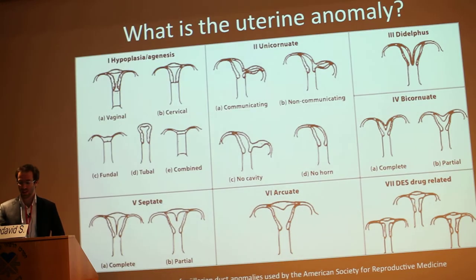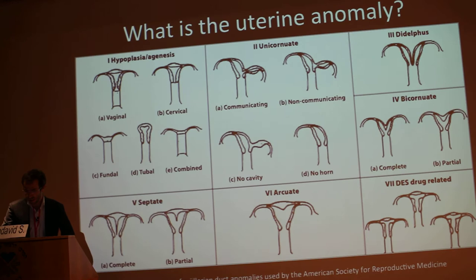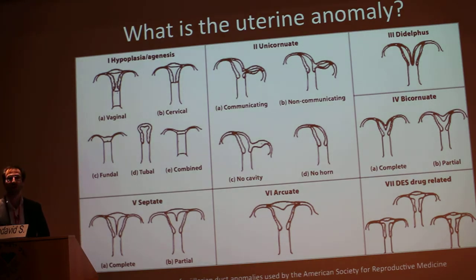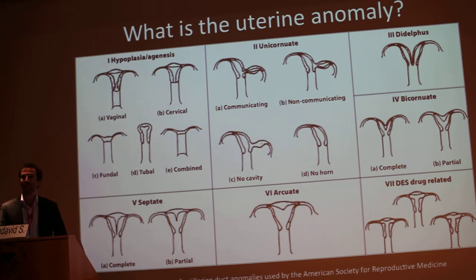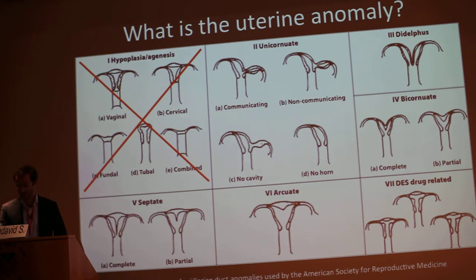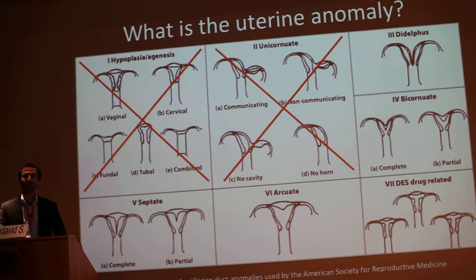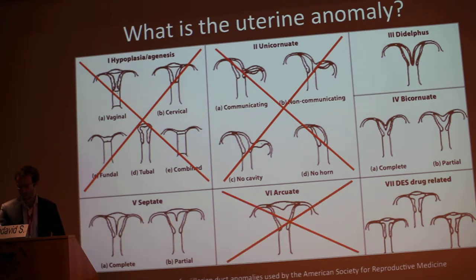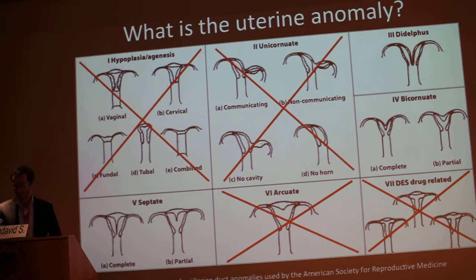So, what is the uterine anomaly? Let's have a look at the American Society for Reproductive Medicine classification. We can quickly rule out the hypoplastic uterus or agenesis of the uterus, as well as the unicornuate uterus — as we have seen, there were two cavities. In this patient, there was no history of in-utero DES exposure, so we can rule that out too, and also the arcuate uterus, as we have seen there was a septum.